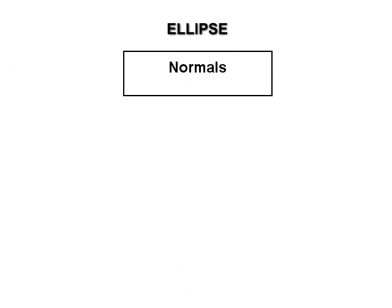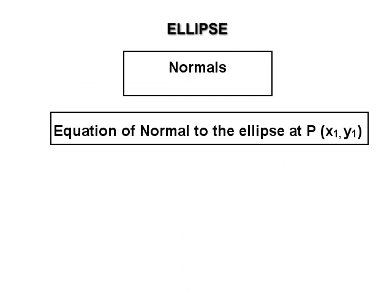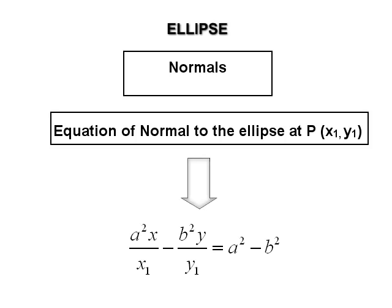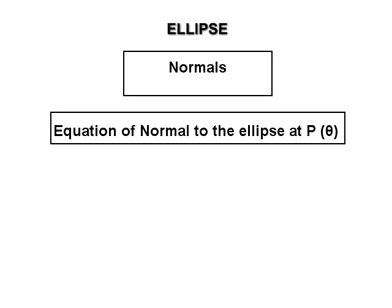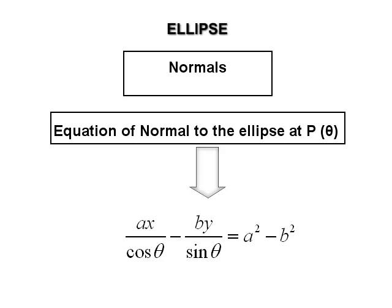Normals. The equation of the normal to the ellipse x² upon a² plus y² upon b² equal to 1 at point P(x₁, y₁) is a²x upon x₁ minus b²y upon y₁ equal to a² minus b². The equation of the normal at P(θ) is ax upon cos θ minus by upon sin θ equal to a² minus b².